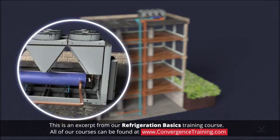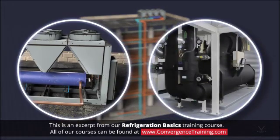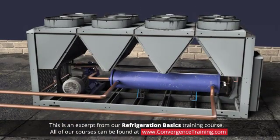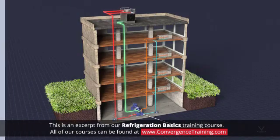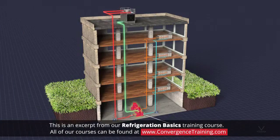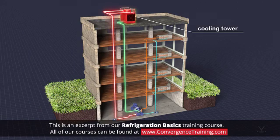Chillers can be air-cooled or water-cooled. Air-cooled chillers release thermal energy from the refrigerant in the condenser to the outside air, while water-cooled chillers release thermal energy from the refrigerant in the condenser to a cooling water loop, which is pumped to a cooling tower where it is cooled for reuse.